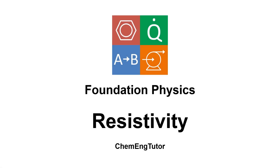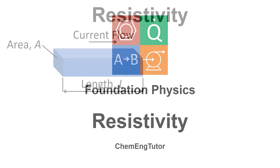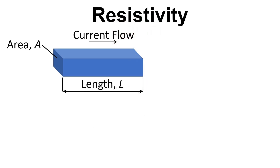In this video we're going to take a look at resistivity. Resistivity is a property that depends on what the material is made out of, and it allows us to calculate the resistance of a material.